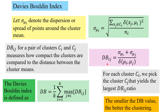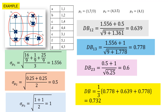We compute this for all pairs of clusters. The Davis-Bouldin index for the whole clustering is taken as the average over all k clusters. Note that for each cluster C_i, we pick the maximum db_ij — that is, for each cluster C_i, we pick the cluster C_j that yields the maximum db_ij.